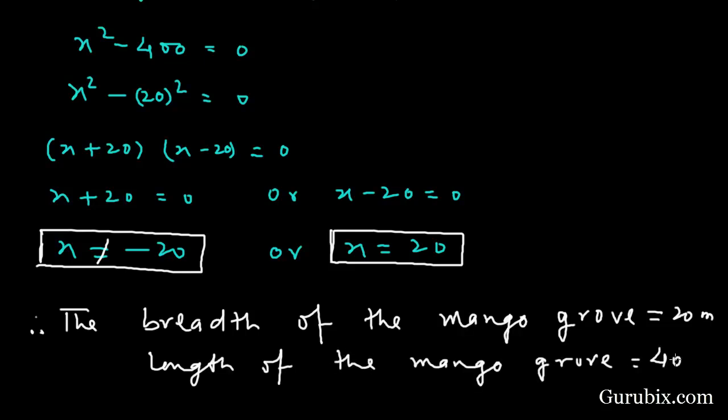Therefore, the breadth of the mango grove equals 20 meters and the length of the mango grove equals 40 meters. So this is the solution of the question. Thank you.